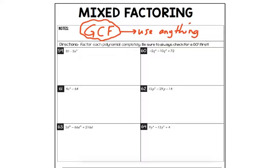For example, let's just do number 59. This is 81 minus 3a cubed. I'm going to use GCF — check. And there actually is one. Not a letter, but the 3. So I'm going to factor out a 3 first. 3 into 81 goes in 27 times. Minus — divide the 3 out — and I get a cubed. So I did my GCF check.